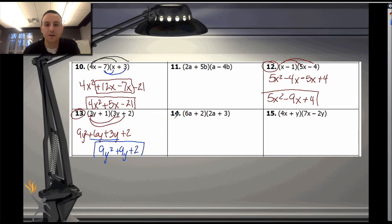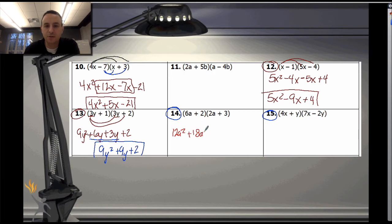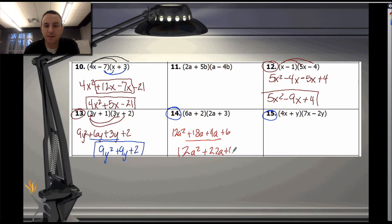Try problems 14 and 15 — pause the video, then we'll work through them. For number 14: distributing gives 12a squared plus 18a, then 4a plus 6. Combining like terms: 12a squared plus 22a plus 6.